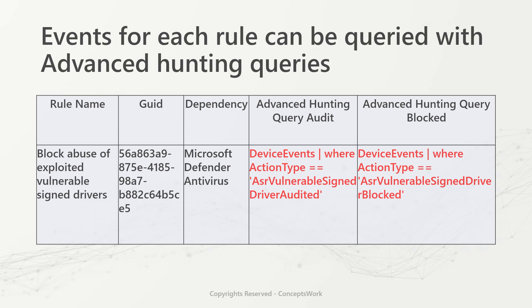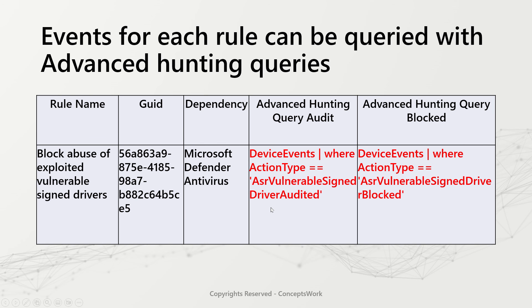If you want to know rule-specific events, there are two queries you can use. The table you have to use is device events, and the action type should be ASR vulnerable signed driver audited or blocked. The dependency for this rule is Microsoft Defender Antivirus to be running in an active state with cloud protection on.